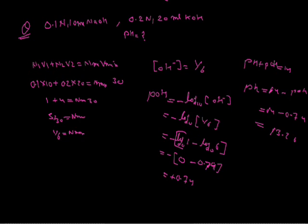When the examiner gives you a mixture of base and base, use the additive formula. Note that Nmix here represents the concentration of OH minus. So first calculate pOH, and then calculate pH from pH equals 14 minus pOH.